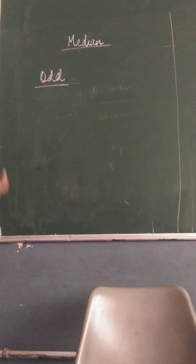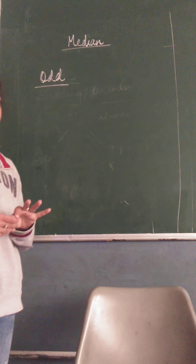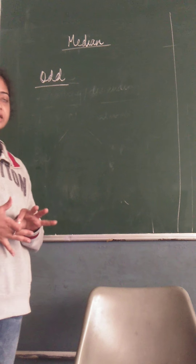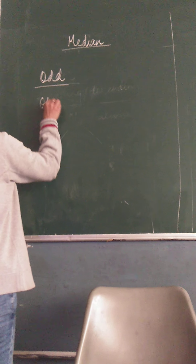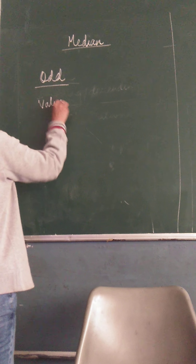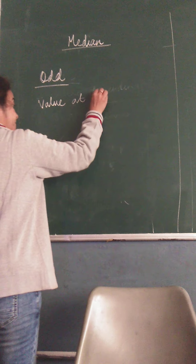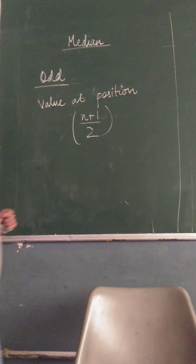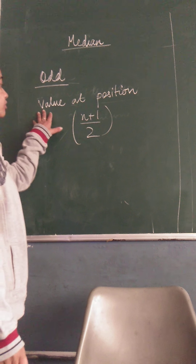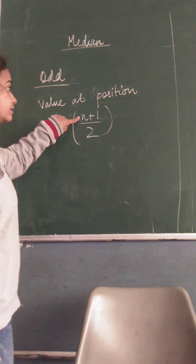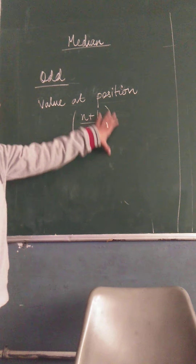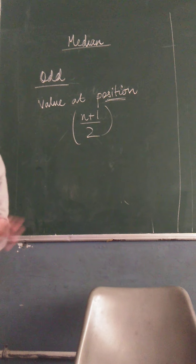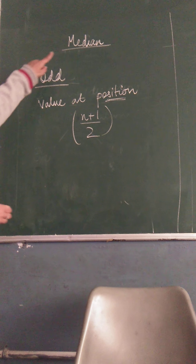What we do is we first arrange the data in ascending or descending order. Then we find the position — the observation at which place. The value of the position is n plus 1 upon 2. This means after arranging the data, it is this position that we have to find out. n plus 1 upon 2 represents the position that we have to take to find out the median.